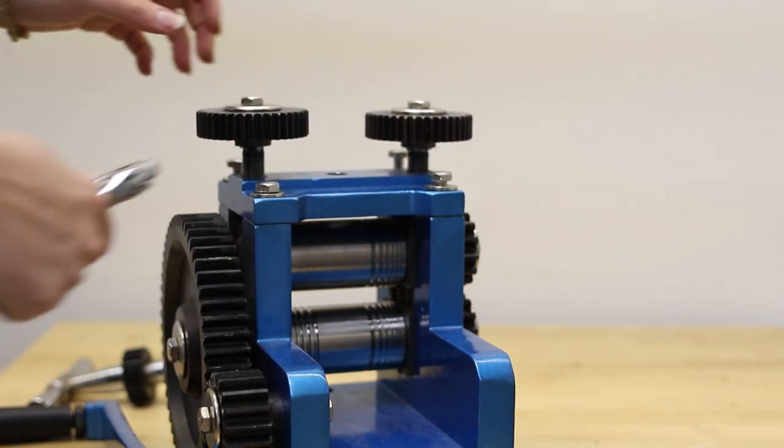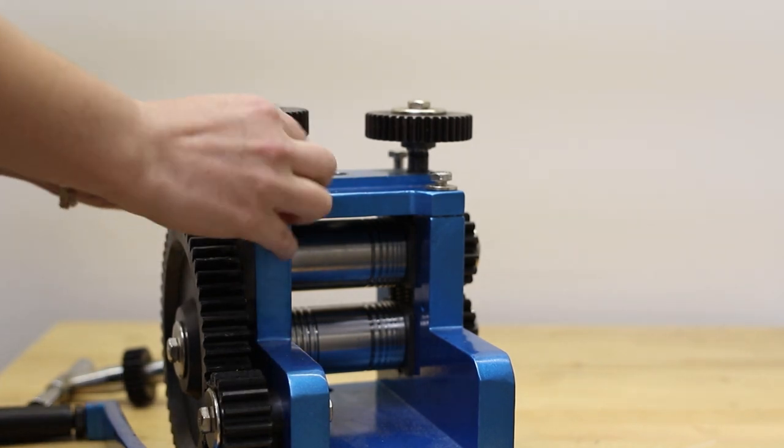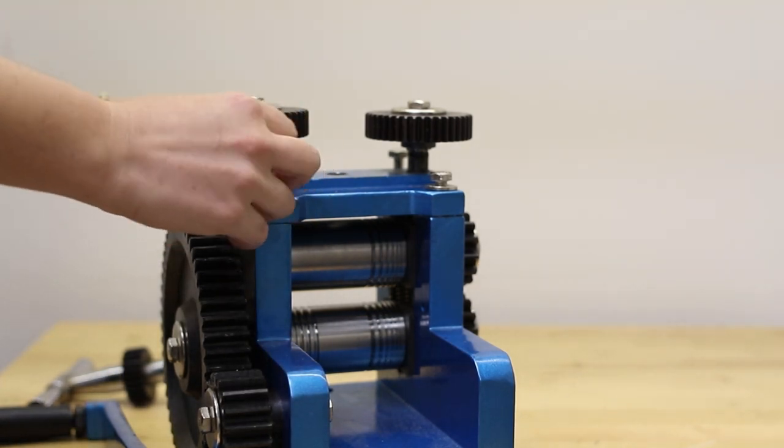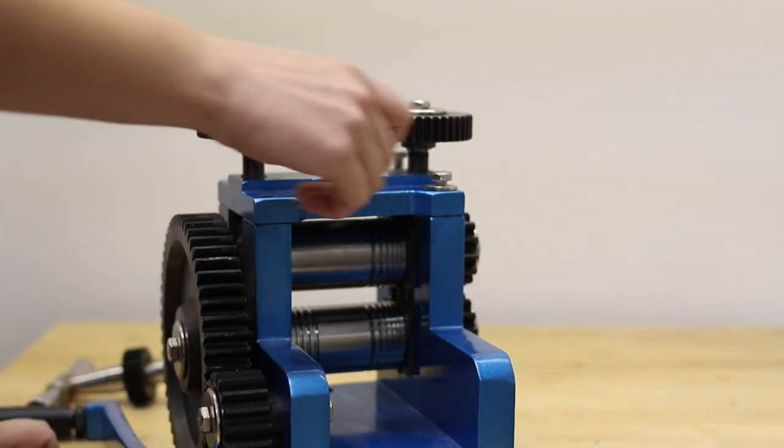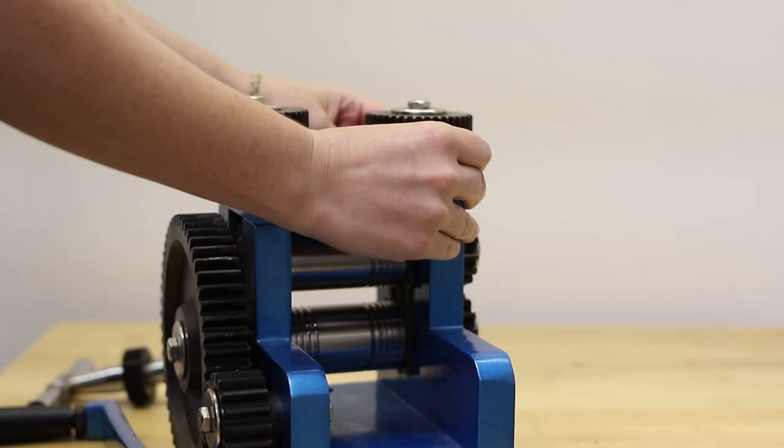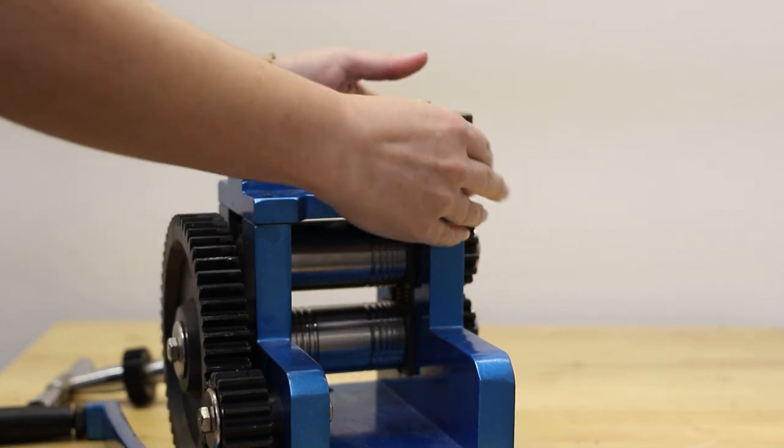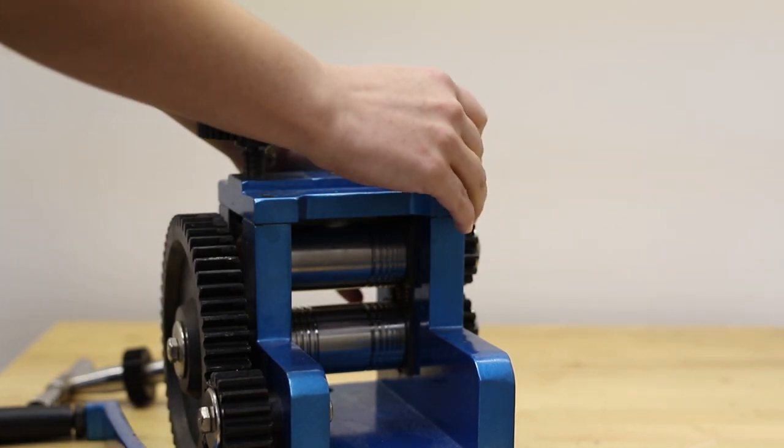So the first thing you're going to do is take the T-bar out of the top of the rolling mill, and then you're going to unscrew the bolts that hold the top plate down so that you can lift the top plate off. By the way, for a list of parts of the rolling mill, you can find them in the instructional PDF on our website. I'll put a link in the description below. Once you've got those bolts undone and you take the top plate off, you should be able to slide the top roller out.